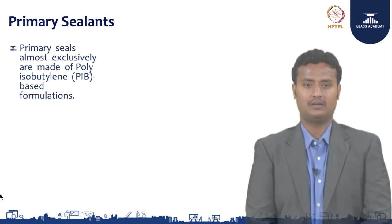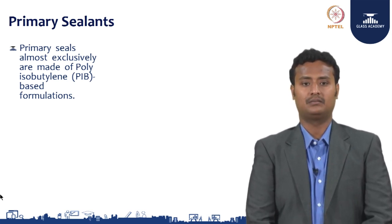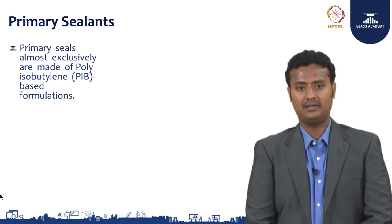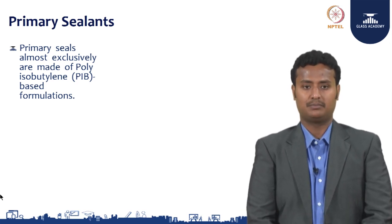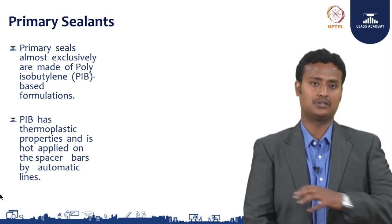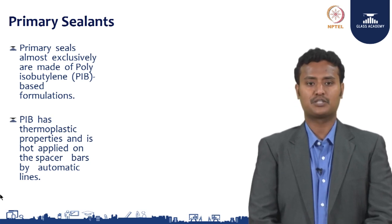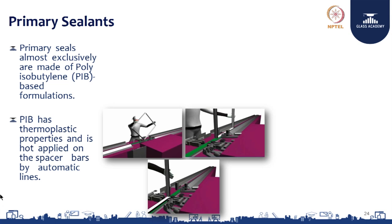Let us discuss primary sealant. Primary sealants are used extensively and are made of polyisobutylene — known as PIB — based on formulations. PIB polyisobutylene has thermoplastic properties and can be applied as a hot-applied sealant through the spacer bar by automatic lines with butyl extrusion machines, which are widely used for dispensing this primary sealant. This is the primary sealant extrusion machine, which has two nozzles through which the primary sealant is dispensed onto the spacer. The spacer has two sides, so in a single stroke both sides are applied.